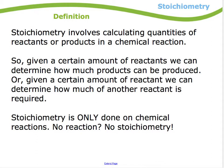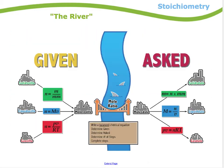Or, if I know a certain amount of one reactant, I can determine how much of another reactant I need for a full reaction to happen. Stoichiometry is all about figuring out amounts given a chemical reaction. It's only done on chemical reactions — if I'm just looking at a gas or a solution, I don't do stoichiometry. It's only reserved for reactions.